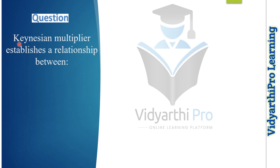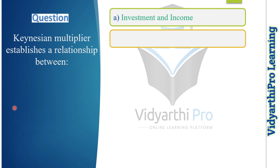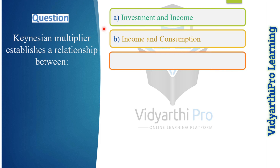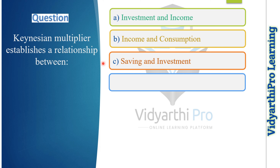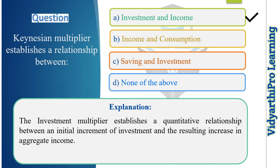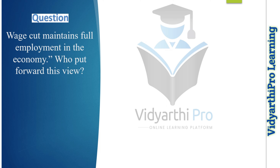Our next question: the Keynesian multiplier establishes a relationship between which of the following? Option one: investment and income. Option two: income and consumption. Option three: saving and investment. Option four: none of the above. The correct answer is option A, investment and income, because the theory of employment multiplier establishes a quantitative relationship between an initial increment of investment and the resulting increase in aggregate income.